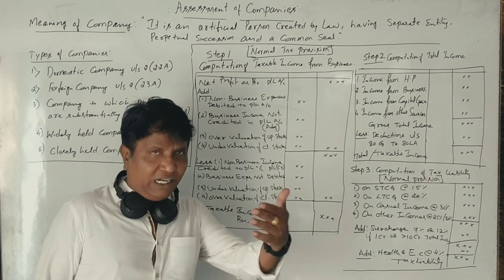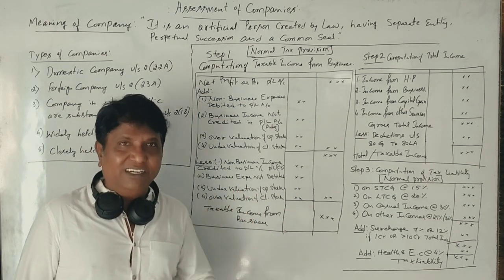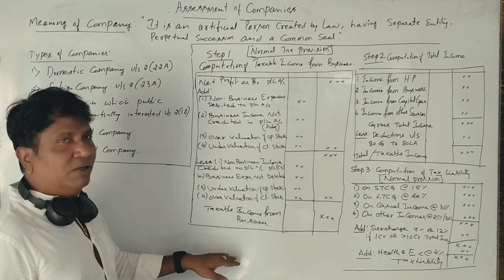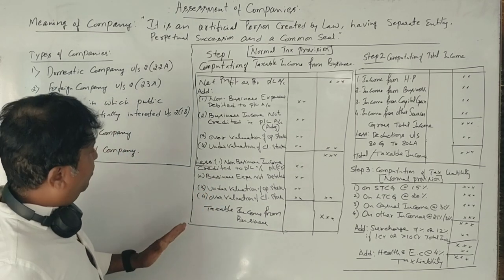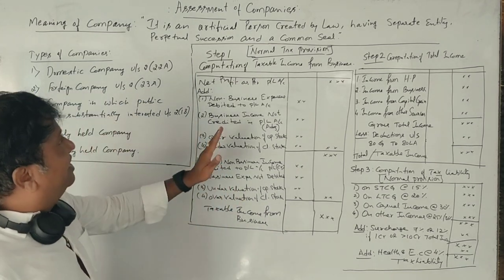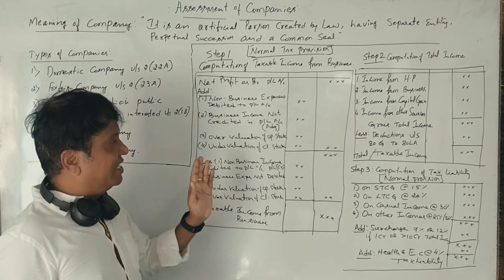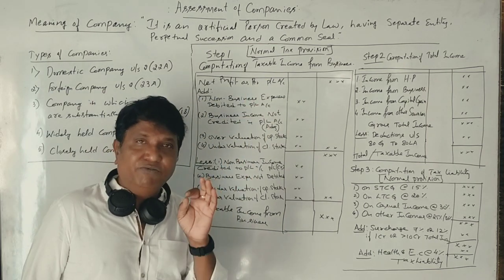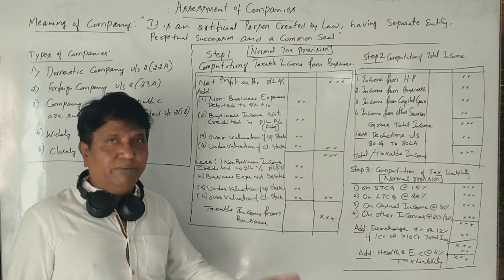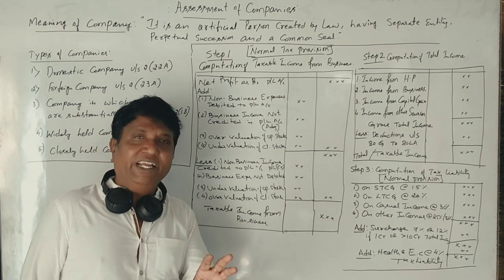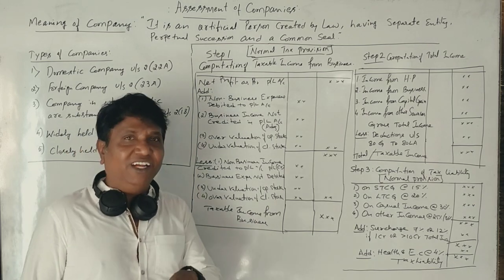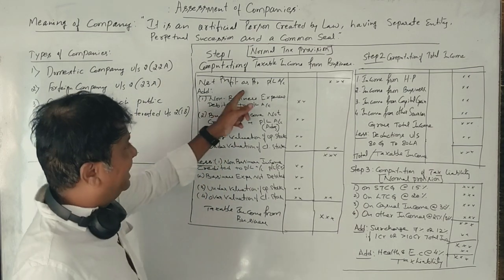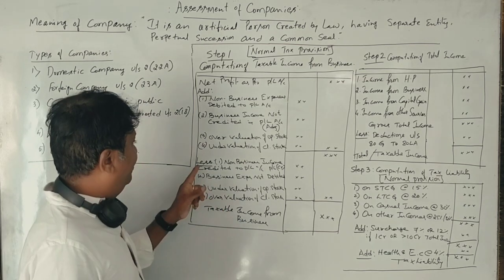I have released many videos related to income from business in income tax, so if you learn that, step number one will be easy. Now let us see how we assess companies. In assessment of companies, we come across three different steps. The first step is computation of taxable income from business. While computing taxable income from business, we will be provided a company's trading and profit and loss account. From that, we take the net profit as per the profit and loss account.